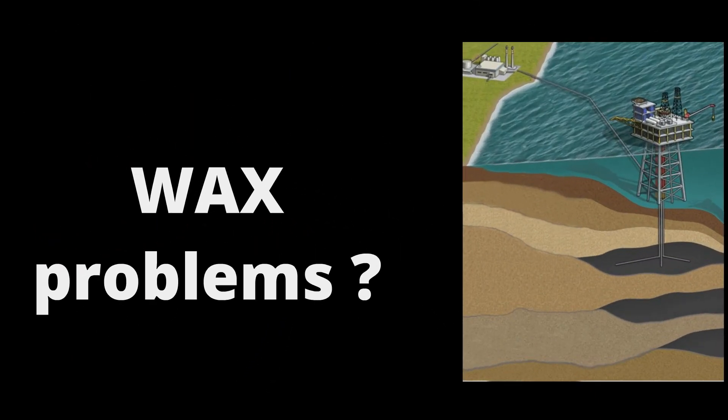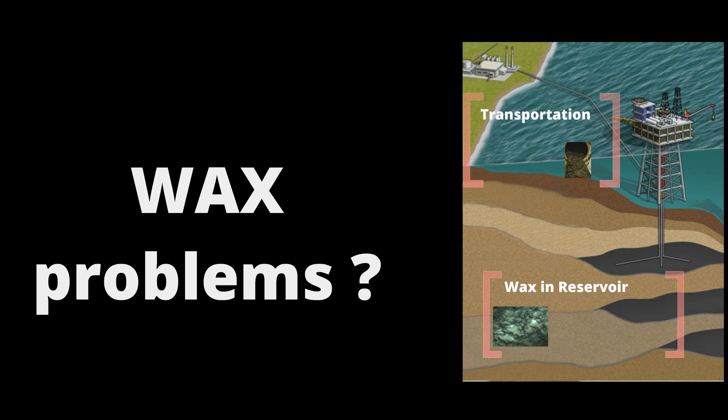Several challenges are associated with upstream oil production. Since its inception, the petroleum industry has been plagued by paraffin. When oil flows in wellbores and pipelines, wax precipitation and deposition may take place according to the surrounding conditions. Paraffin deposition can be a determining factor for not producing deepwater fields. The menace of wax problems would become more and more present as oil exploration activities extend to offshore environments.